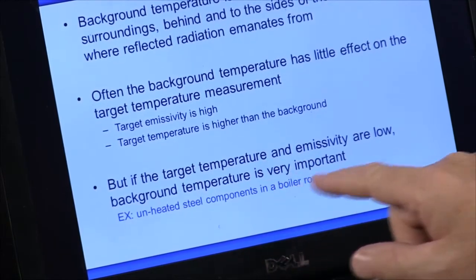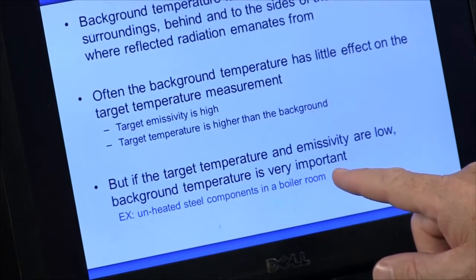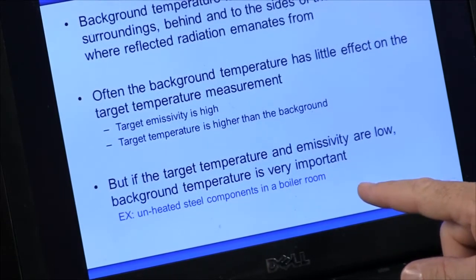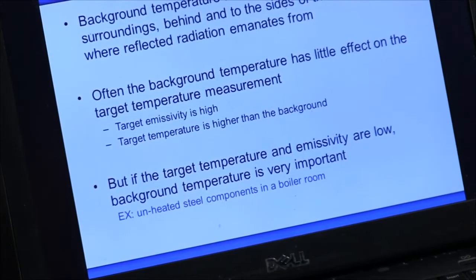But if you're in an area where the temperature difference is very low and the emissivity is low, then the background temperature can be important. For example, if you're in a boiler room and you're taking an image of an electrical connection with a hot boiler behind you.